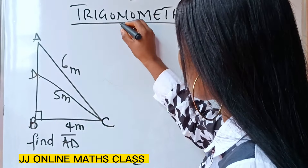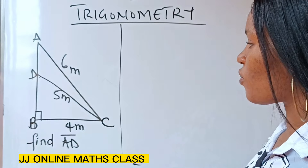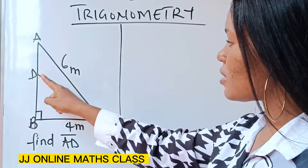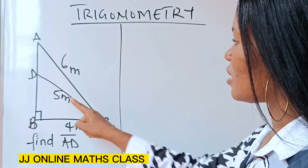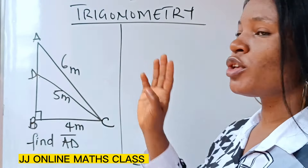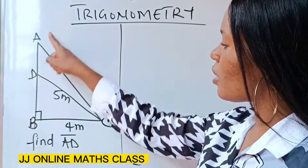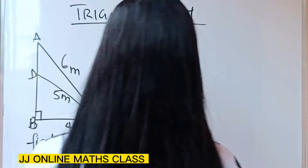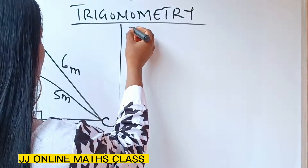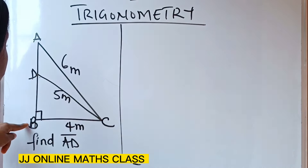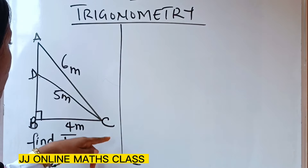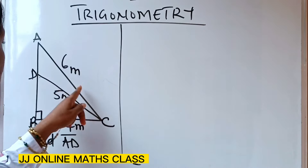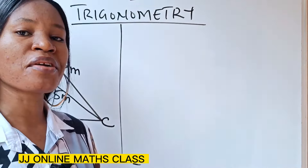In this kind of question, I'm going to first neglect this line here and concentrate on angle ABC. So if I concentrate on angle ABC, we have this shape and this is the hypotenuse.